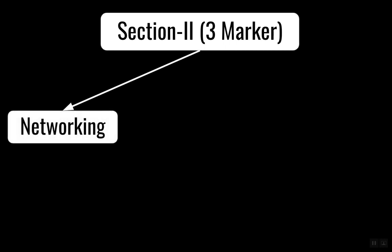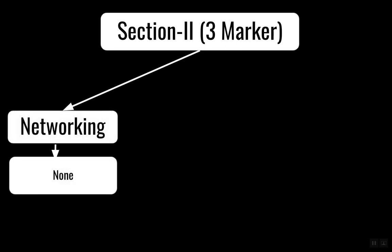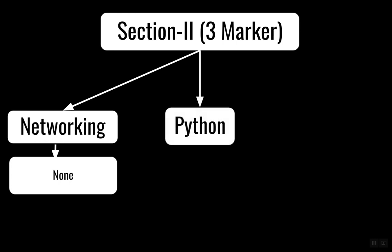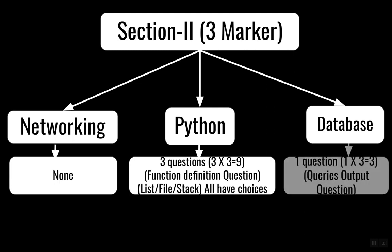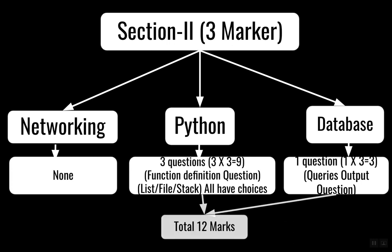The second section of Part B has three-marker questions and there is no question from networking here, because networking has been taken into the last case study part. You have Python questions and database questions where proper programming questions have been asked. From Python: data structures — stacks and queues — lists, and files, with choices given. In database there is again a query section. You have to be very thorough with the query part because in almost all areas they have asked queries.